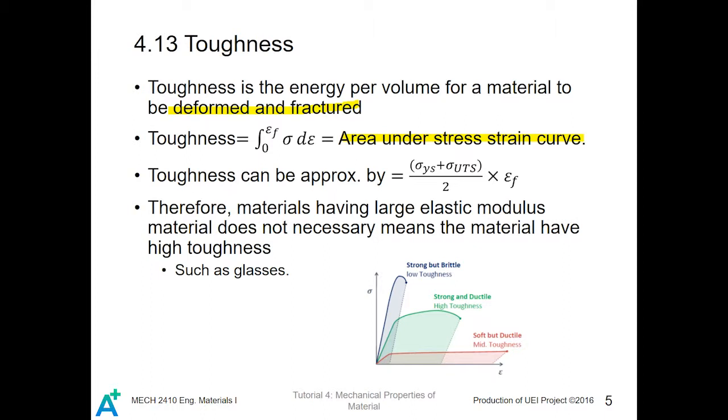Toughness can be approximated by yield strength plus the ultimate tensile strength over 2 times the strain to failure, which is the elongation or strain value at failure.